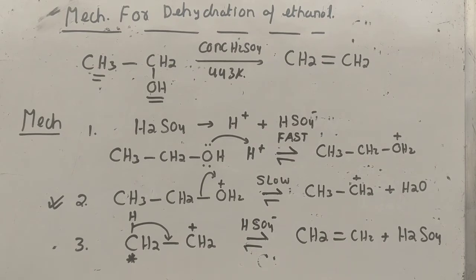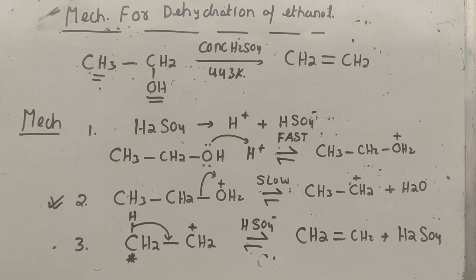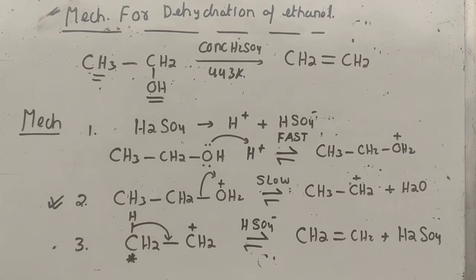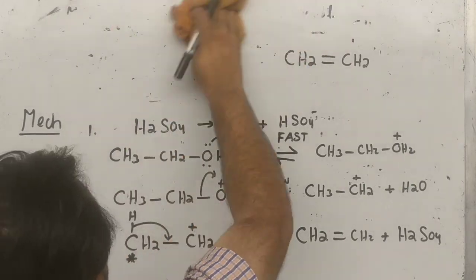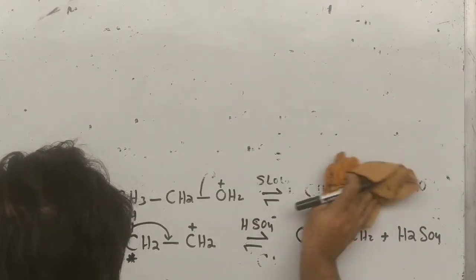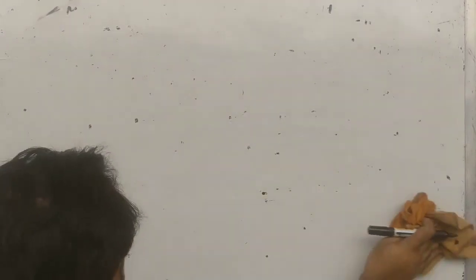You can practice the same mechanism for dehydration of propan-1-ol — just follow the same steps with one extra carbon. This was the mechanism for dehydration of ethanol to form alkene. Previously we had done acid-catalyzed hydration of ethene to ethanol — this is the reverse. So this was the first reaction: dehydration.